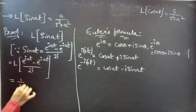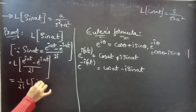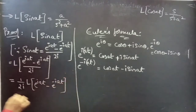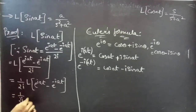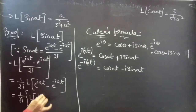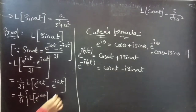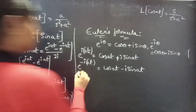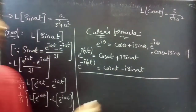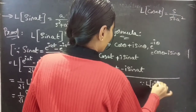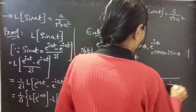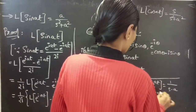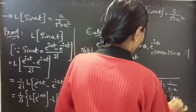We can write this as 1 by 2i into L of e power i-a-t minus L of e power minus i-a-t. Since we know that L of e power a-t equals 1 by s minus a, and L of e power minus a-t equals 1 by s plus a.